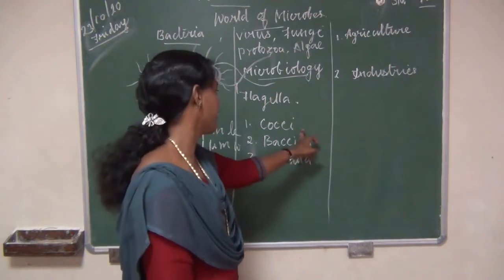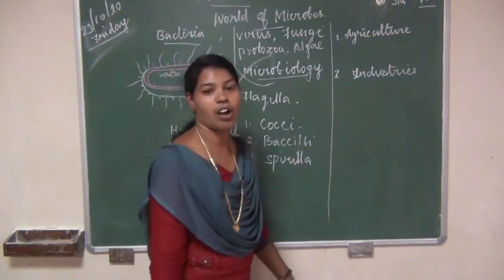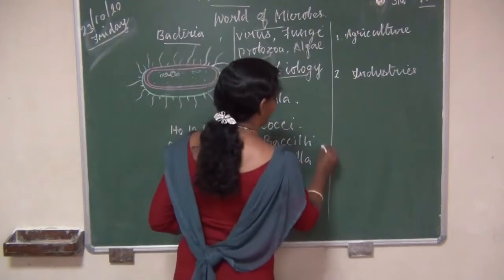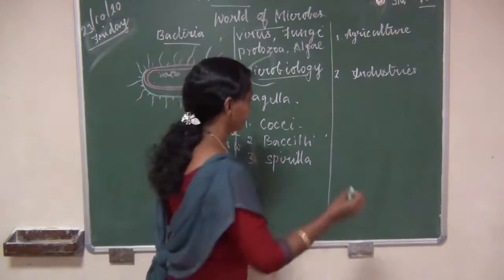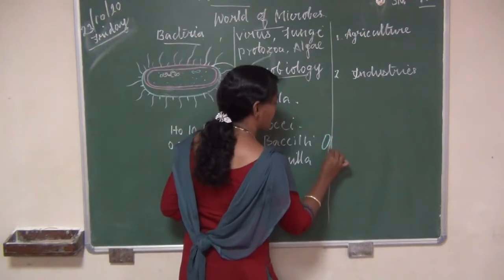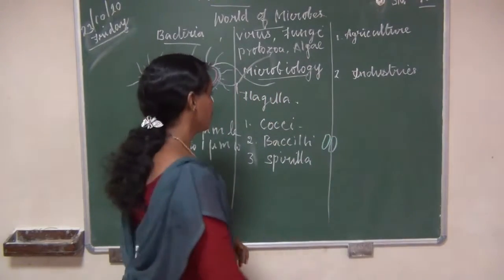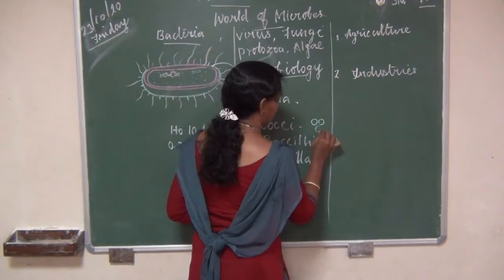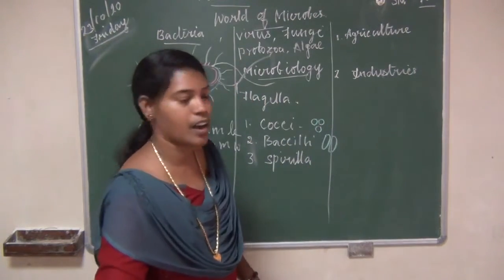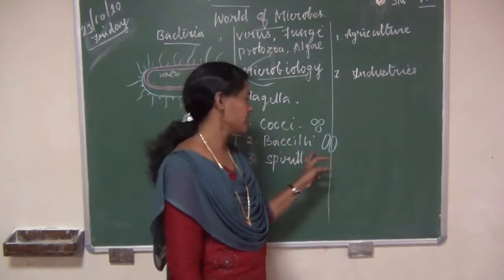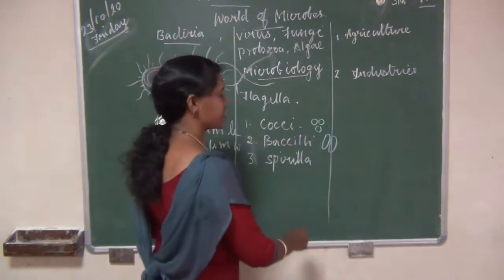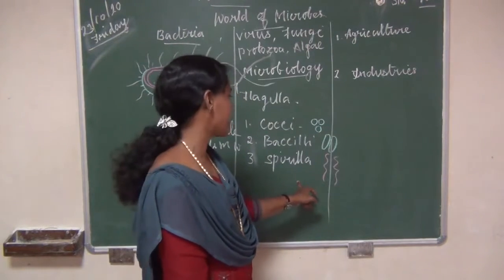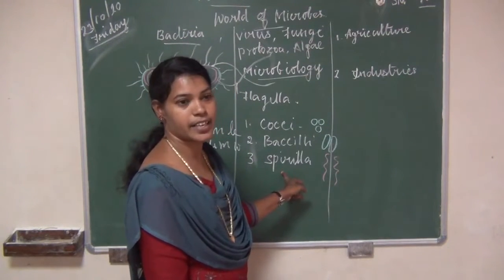The first type is coccus — the spherical-shaped bacteria are called coccus. The second type is bacillus — the rod-shaped bacteria are called bacillus. The third type is spirilla — the spiral-shaped bacteria are called spirilla.